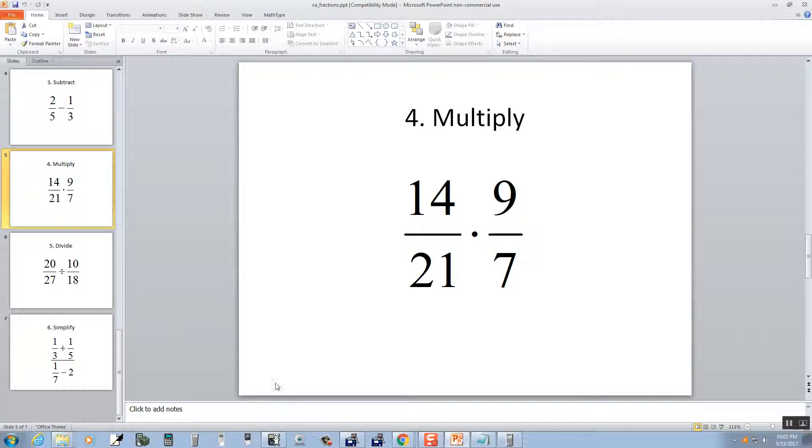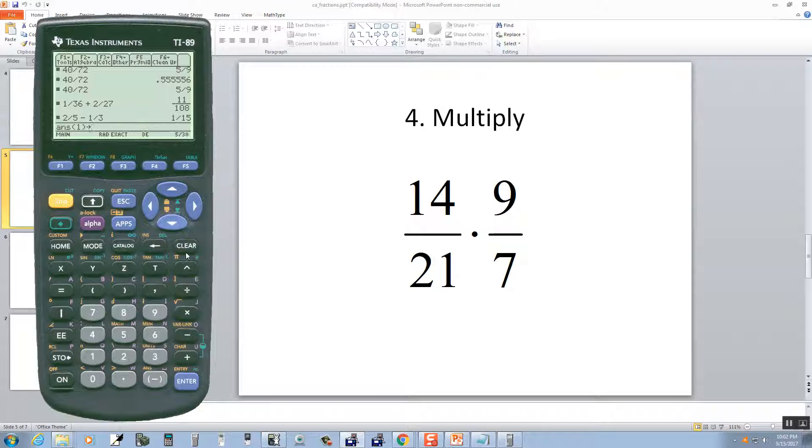Multiplication. So I'm going to do 14 divided by 21 times 9 divided by 7, and push enter, and we get 6/7. Now notice it gives you a weird display over here. If that bothers you, it's still correct order of operations wise, but if that bothers you, what you can do is you can put parentheses around each fraction.